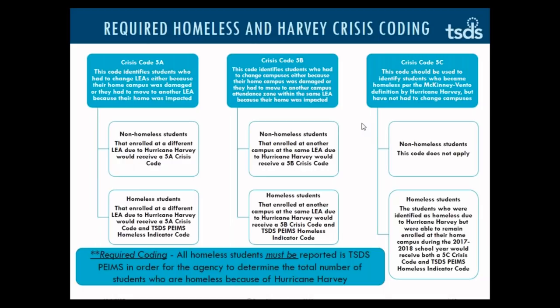Looking at the column on the left, Crisis Code 5A identifies students who had to change LEAs either because their home campus was damaged or they had to move to another LEA because their home was impacted. Non-homeless students that enrolled at a different LEA due to Hurricane Harvey would receive a 5A Crisis Code. Homeless students that enrolled at a different LEA due to Hurricane Harvey would receive a 5A Crisis Code and a TSDS PIMS homeless indicator code.